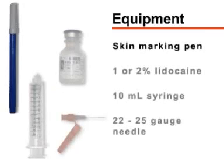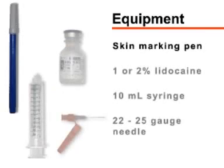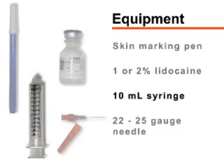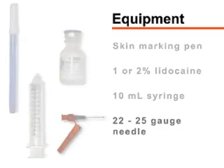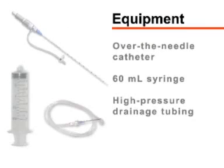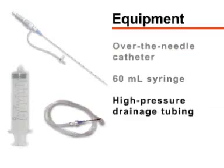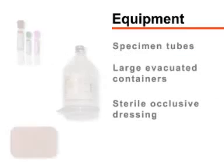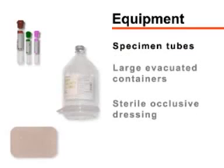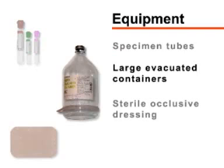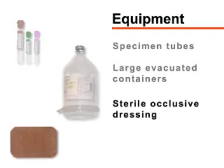You will also need a skin marking pen, 1 or 2% lidocaine, a 10 milliliter syringe, and a 22 or 25 gauge needle. For collection of ascitic fluid, you will need an over-the-needle catheter device, a 60 milliliter syringe, and high-pressure drainage tubing. You will also need specimen tubes, large evacuated containers, and a sterile occlusive dressing.